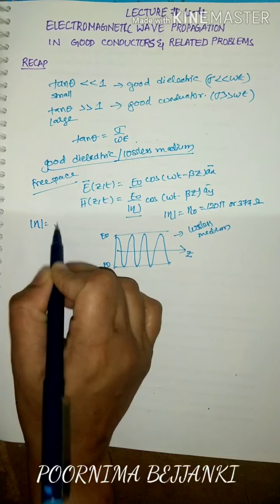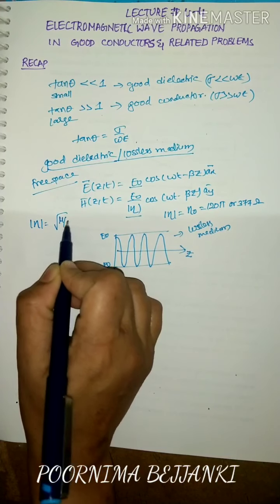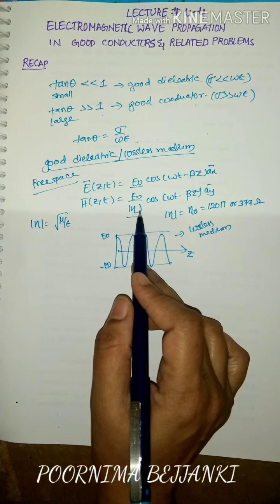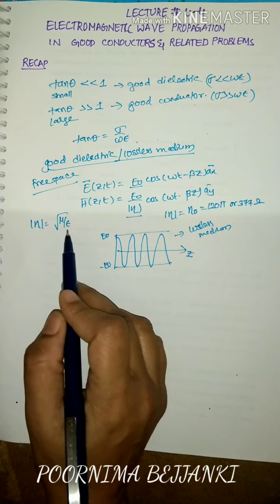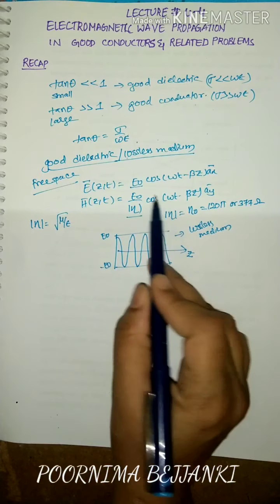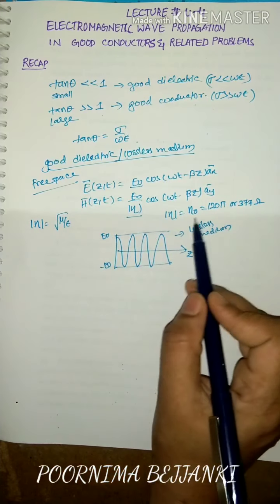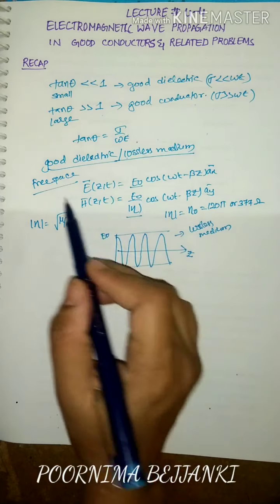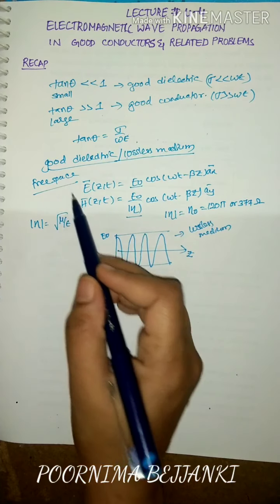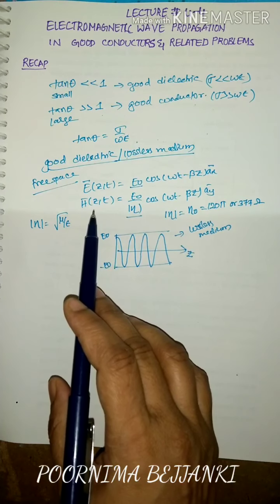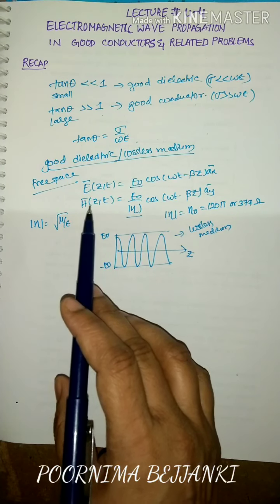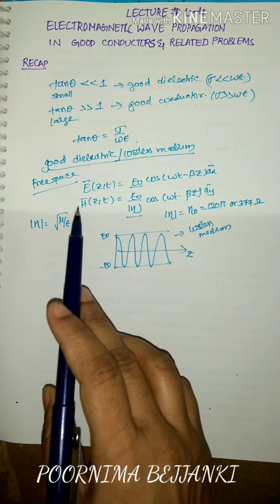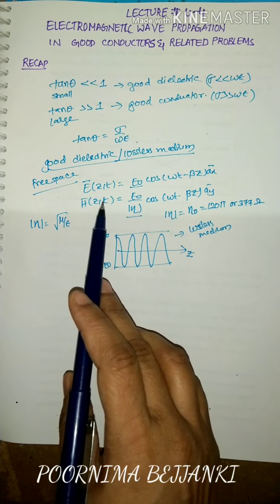For a good dielectric, mod eta equals root of mu over epsilon. For free space, eta naught equals 120 pi or 377 ohms. Free space is also a lossless medium, which allows the electromagnetic wave to propagate through space without attenuation.